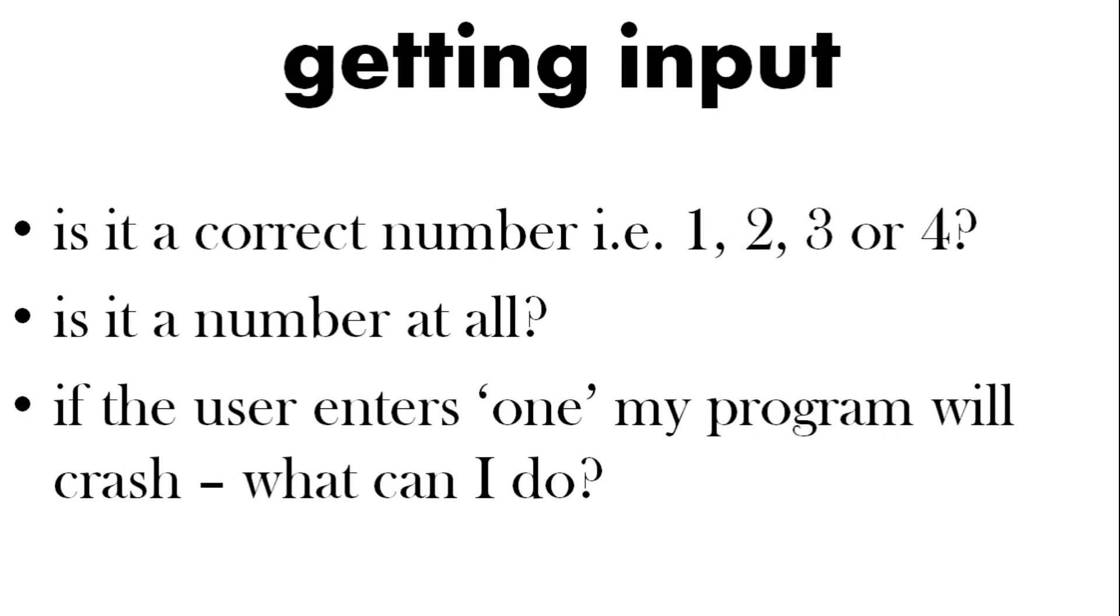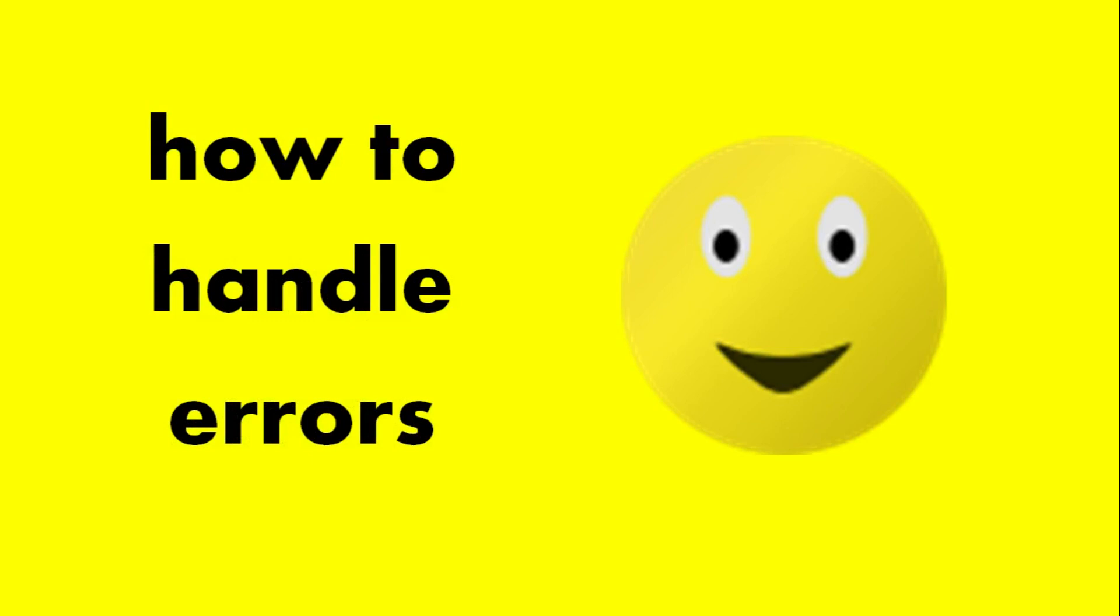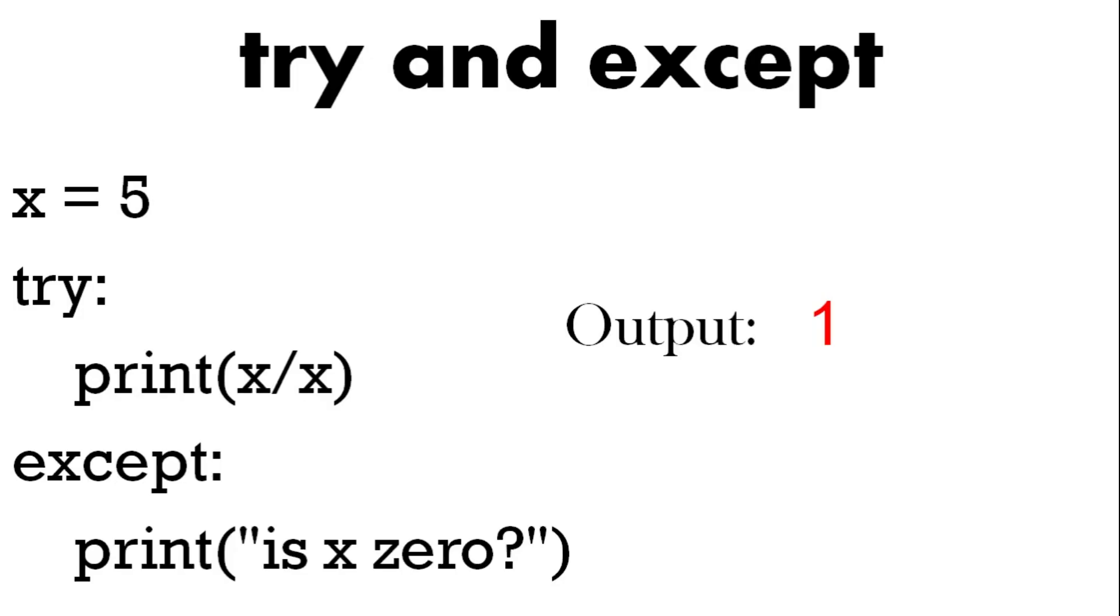What happens if the user puts in something like one O-N-E? At the moment our programs will crash. So is there anything we can do about that? Yes there is. We can handle errors by using something called try and except.